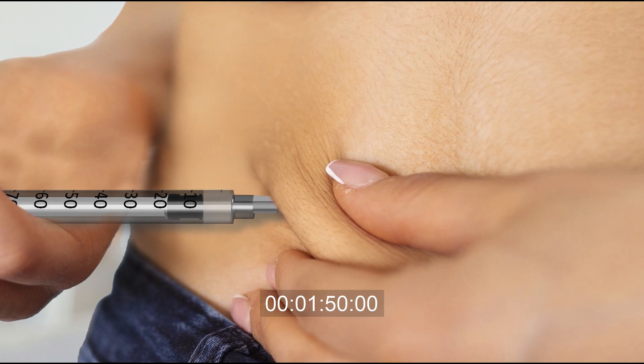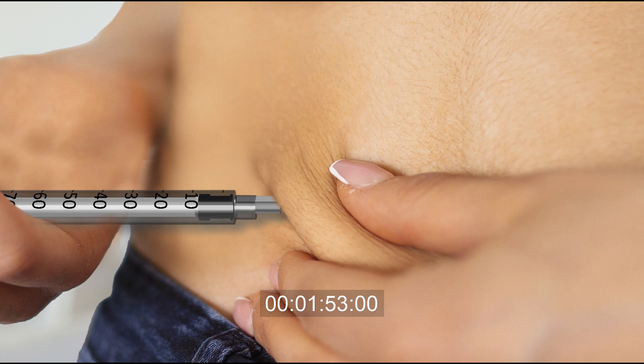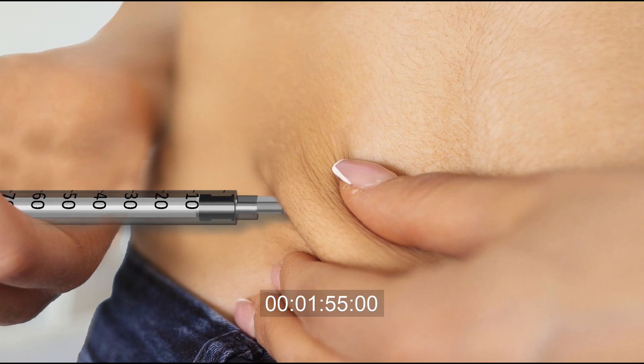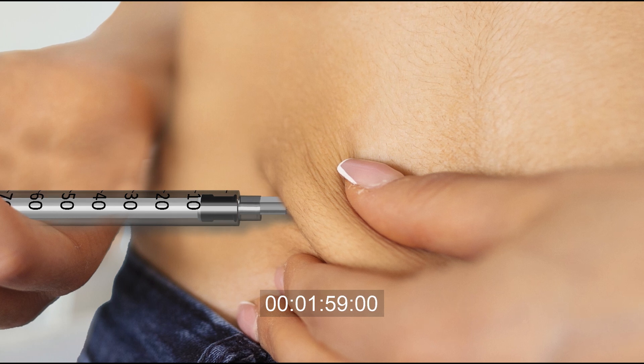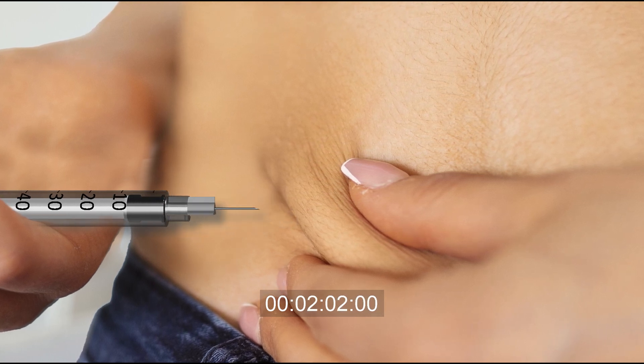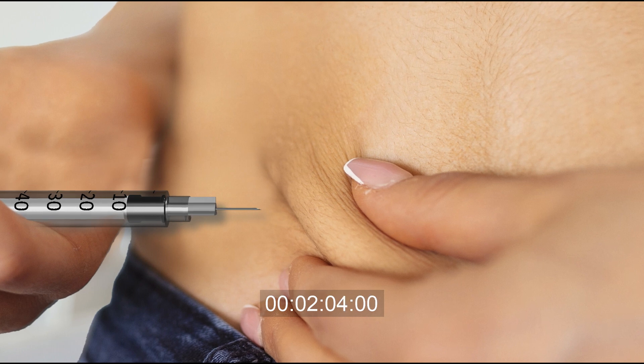Push the plunger at moderate and steady pace until insulin is fully injected. Keep the needle in your skin for 5 seconds. Remove the needle at the same 90 degree angle as it was inserted.